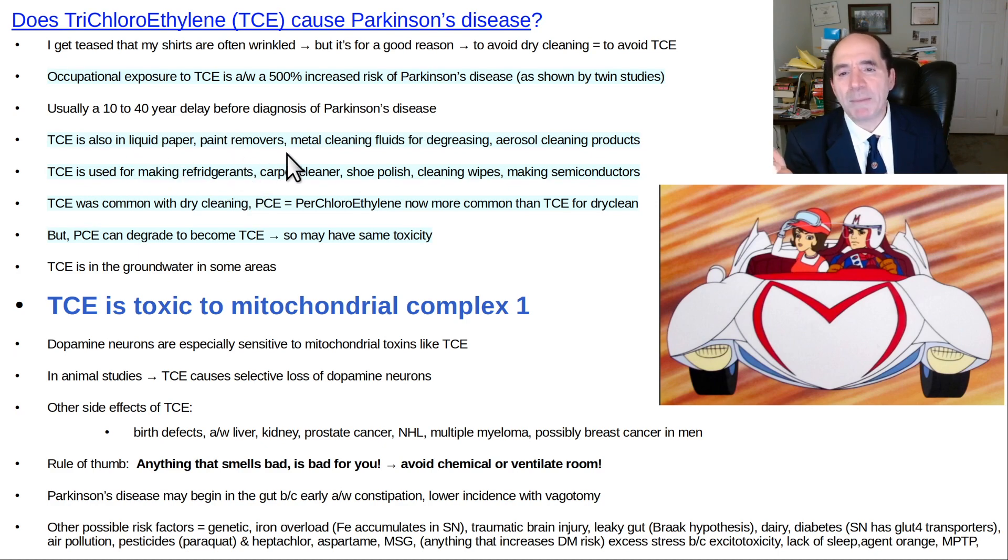TCE was also in liquid paper, paint removers. It's a solvent. It's used to cleaning grease off a metal. Aerosol cleaning products, cleaning wipes. It's used for making refrigerants, carpet cleaners, shoe polish, also for making semiconductors. They now have a sort of a variation upon it, perchloroethylene. That's more common than TCE now in the dry cleaning business. But it's still, it degrades. It's thought it'll degrade into TCE. So it's really very similar.